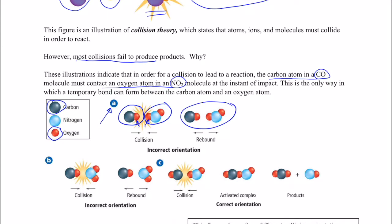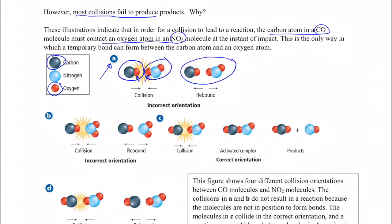In the second scenario, we have the oxygen in carbon monoxide colliding with the nitrogen in nitrogen dioxide. Remember, for an effective collision in this reaction the carbon atom must collide with an oxygen atom in NO₂. So once again this is ineffective and the two molecules will bounce off of each other.